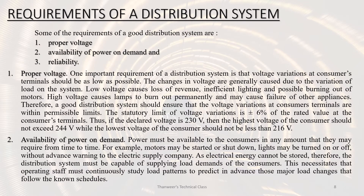Next, the requirements of a good distribution system. First is proper voltage. The voltage at the consumers' terminals should have minimum variation. Voltage fluctuation causes problems: low voltage results in inefficient lighting and possible burning out of motors, while high voltage may cause lamps to burn out permanently and failure of other appliances. Therefore, a good distribution system should ensure that the voltage variation at consumers' terminals is within plus or minus the permissible limit.